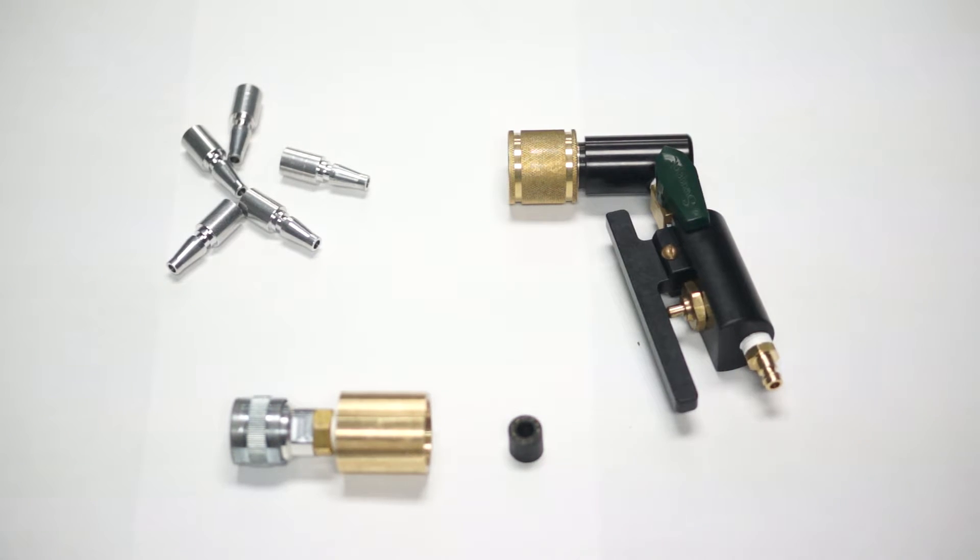Here we're going to show how to retrofit the new Broco Snap cutting rod quick connect system to an existing Broco torch. The advantages of the snap system are that it's a very quick changeout with positive engagement. You don't have the incidence of potential oxygen leaks, and you don't have to worry about trying to tighten a collet nut.